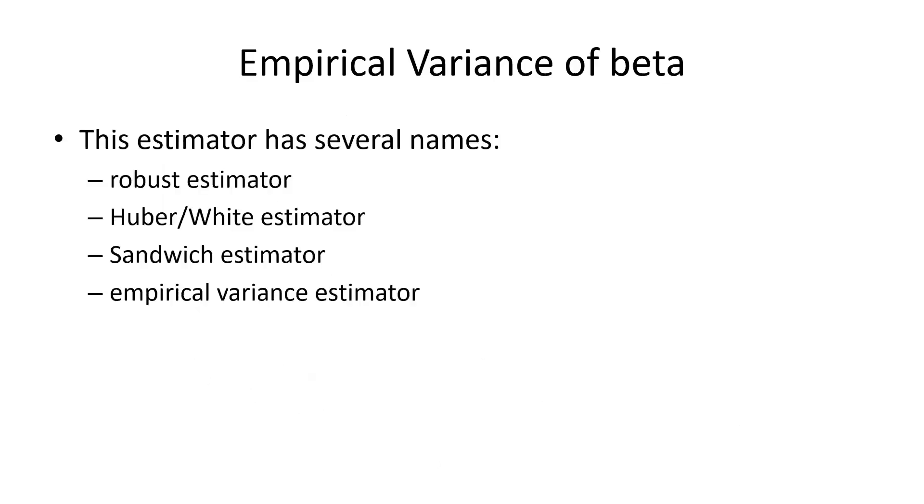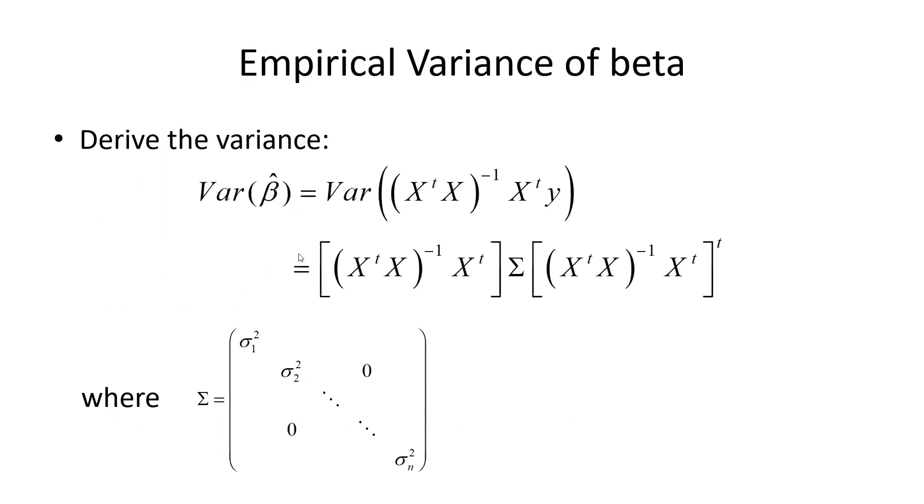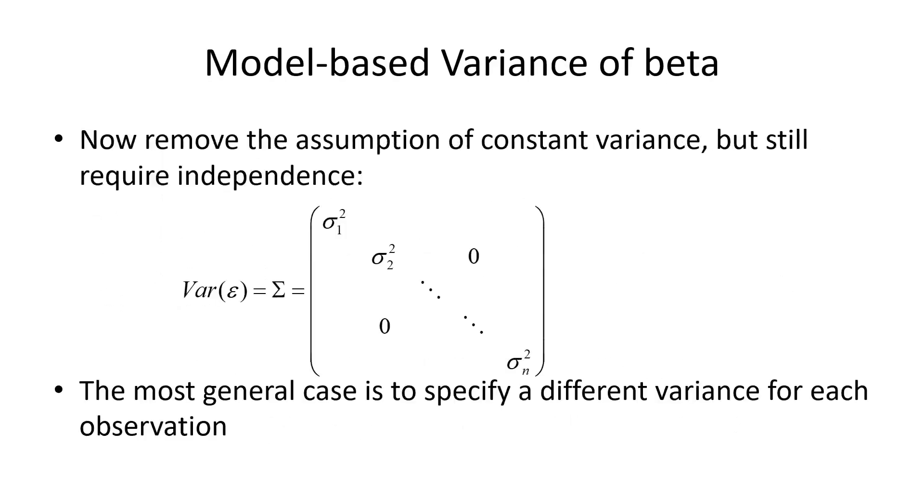It has several names. It has the Huber-White estimator, because White was an inventor and I think Huber independently invented this. It's called the robust estimator for the obvious reason. It's also called the sandwich estimator.